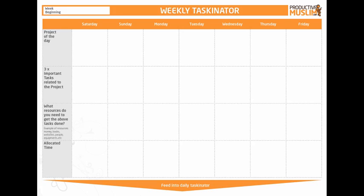Once you've got your daily taskinator in place, the next step is to take a weekly view of what your important projects are for each week, what are your important tasks for each of those projects per day, and finally, what resources you need and how much time you'll spend.